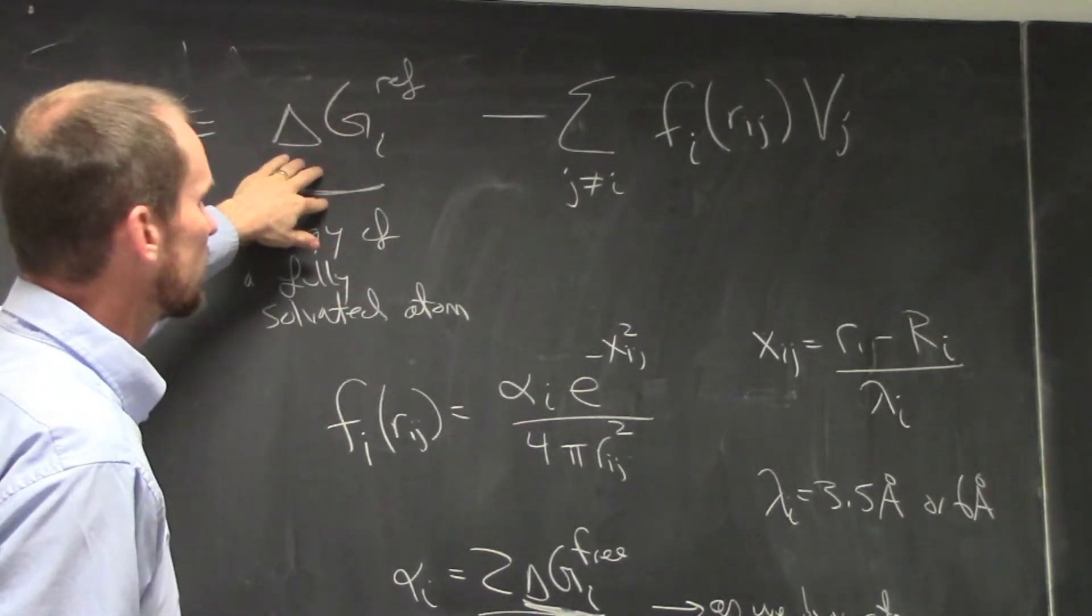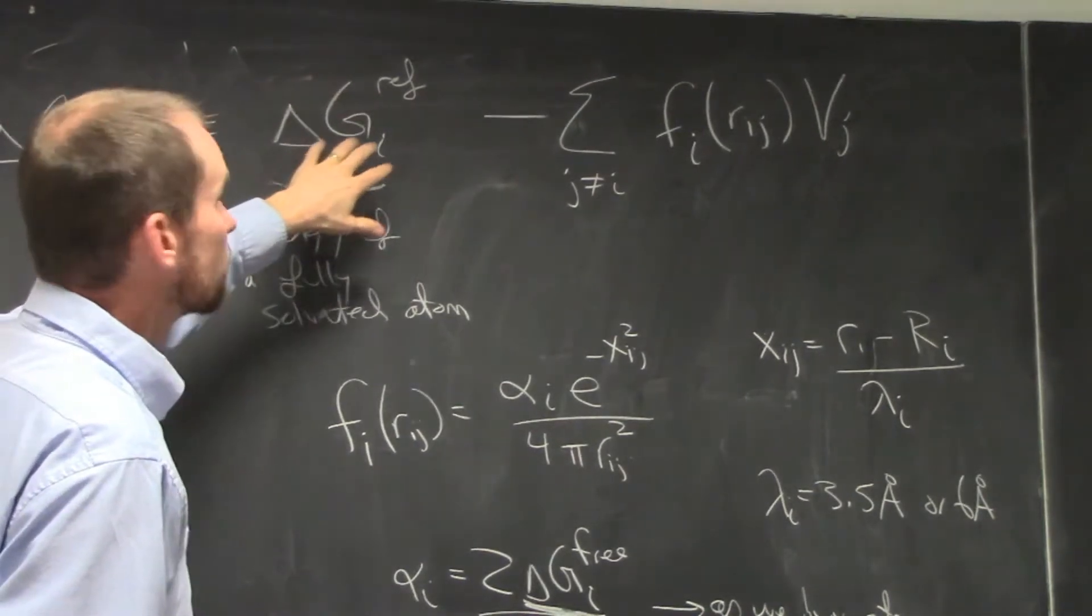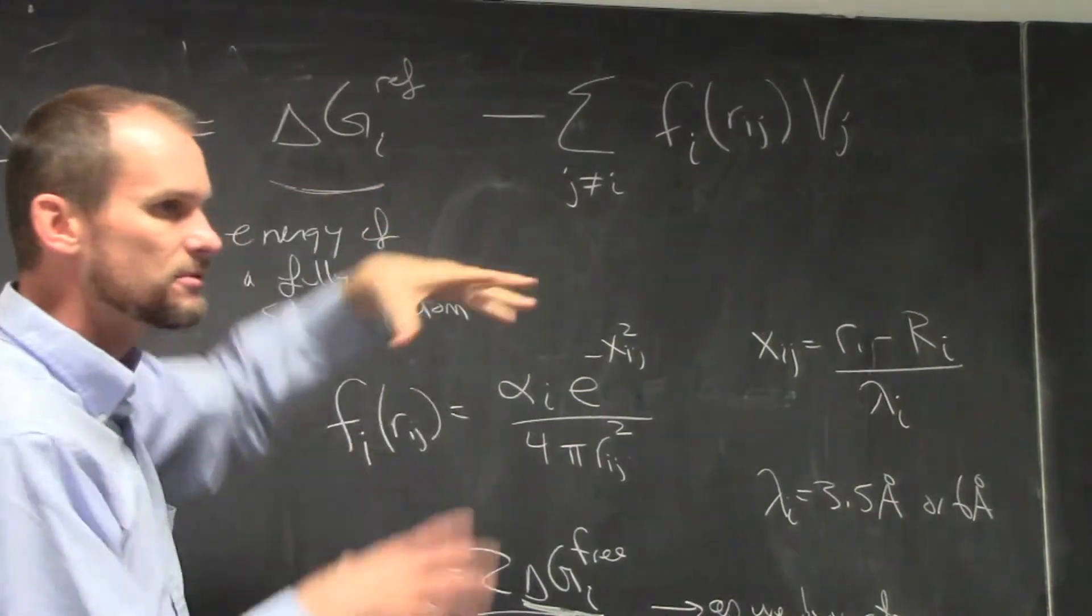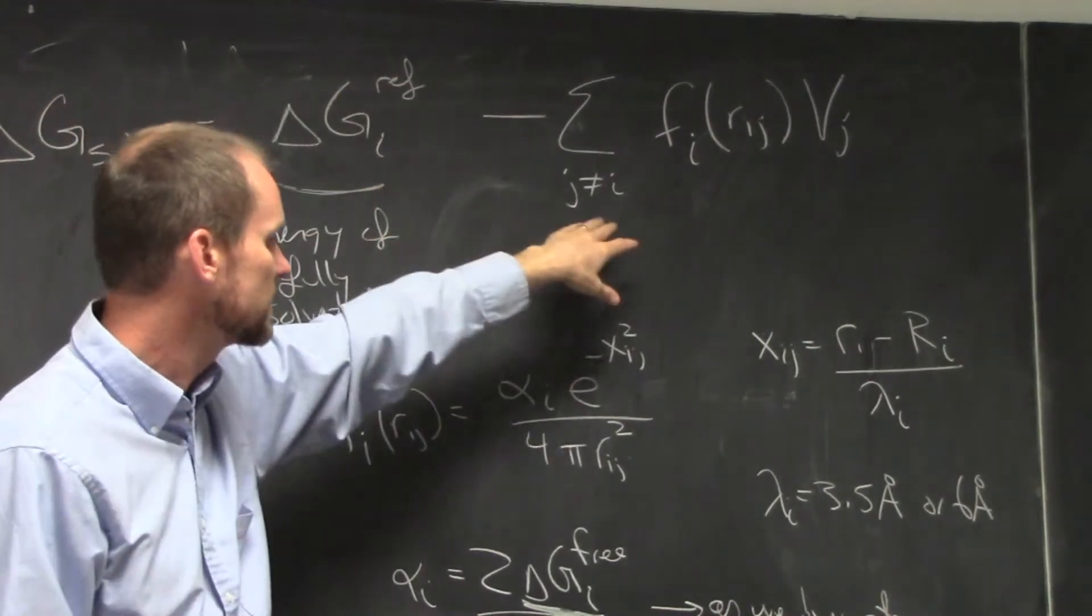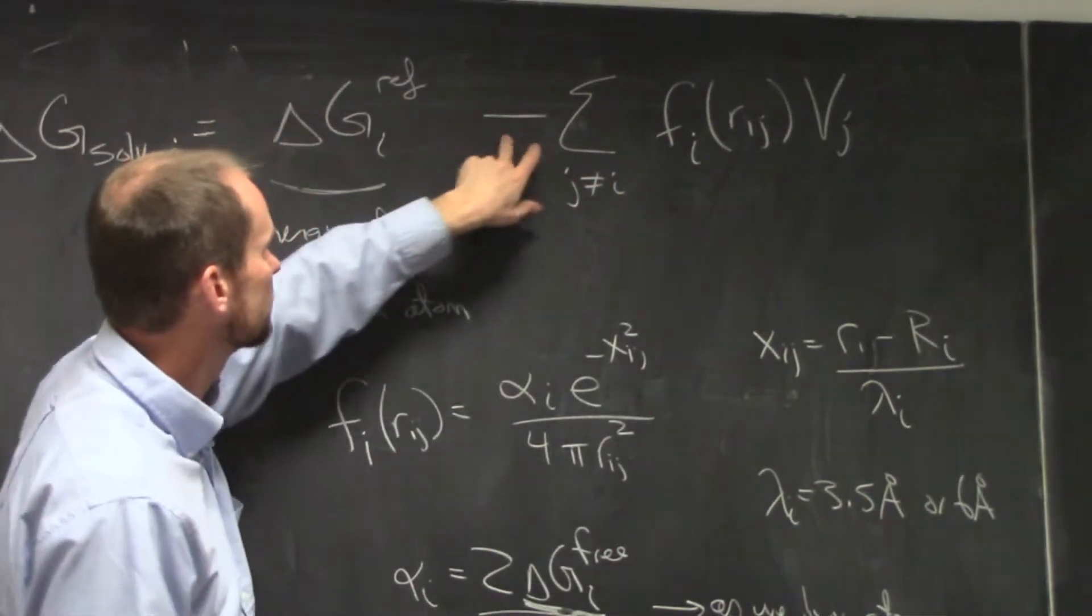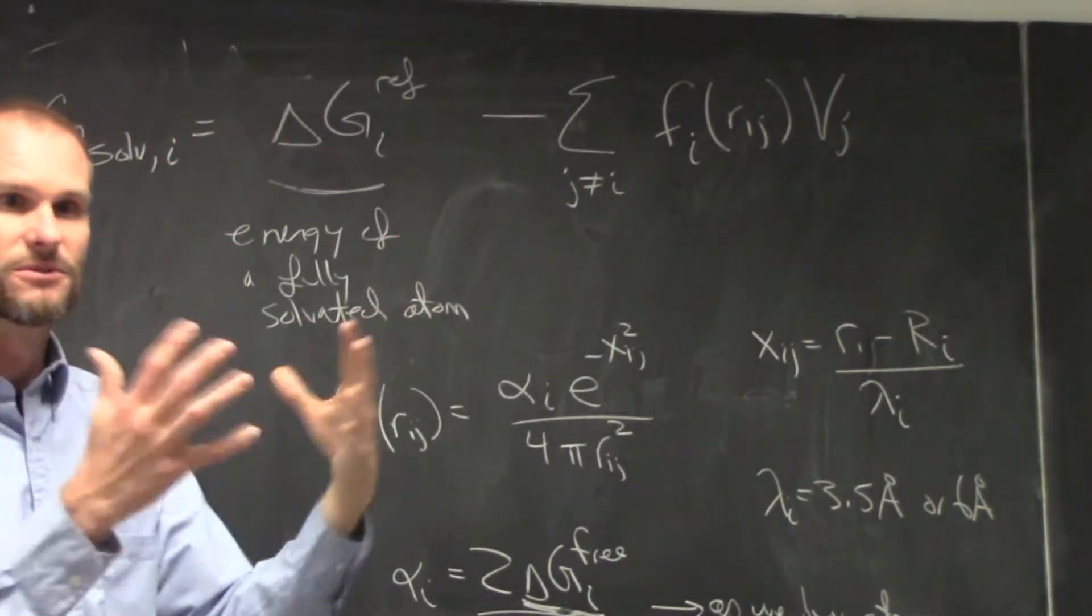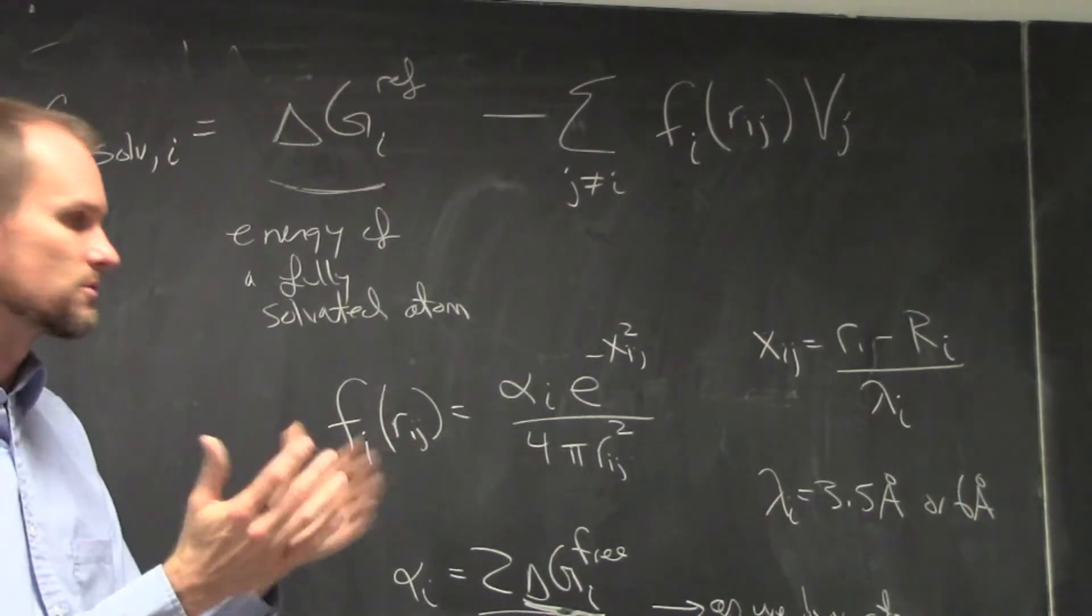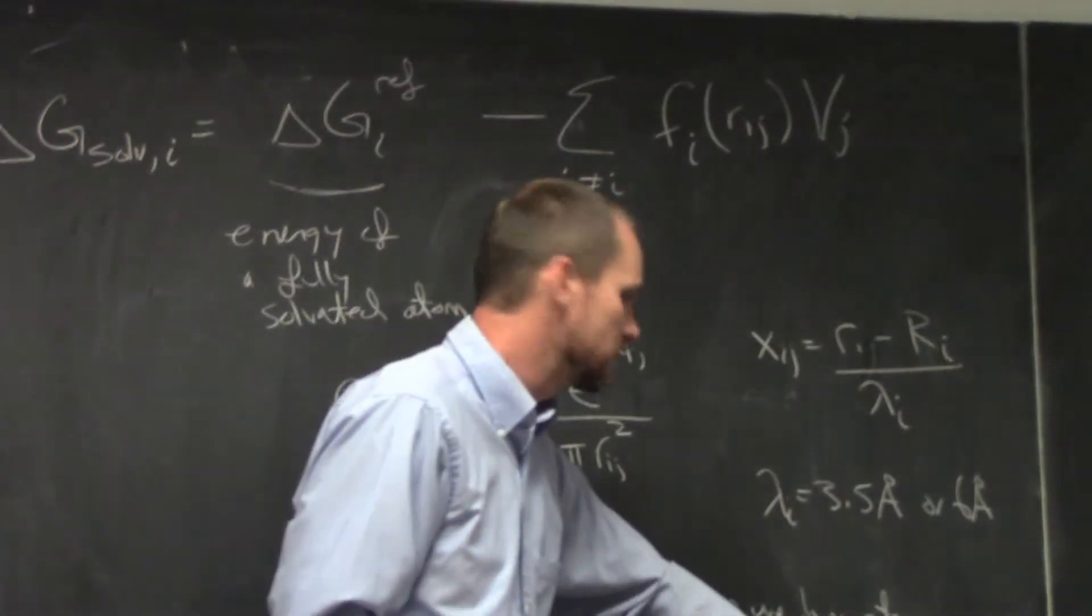For a charged atom, this would be a negative number because it likes to be solvated. And then as we bring in more and more atoms to bury it, this will give me a negative number. The negative times the negative will be positive and we'll go toward a neutral again and go toward zero when it's totally buried.